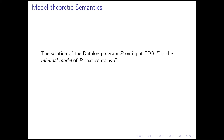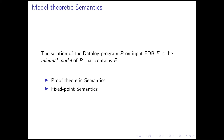Luckily, it happens to be that the intersection of the models is also a model. And even more luckily for us, the intersection of all models — which is also a model — is unique. In fact, this unique minimum model of the program P is exactly the solution of a Datalog program we think of. We define the meaning of a Datalog program P, or the solution, to be the minimum model of P that contains the EDB. Let us take a moment to appreciate the fact that the semantics of a Datalog program is exactly defined, unique, and maps very well to our intuition of what a logic program should mean.